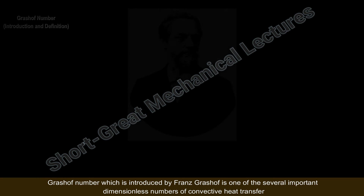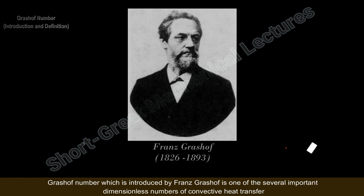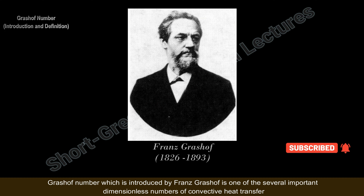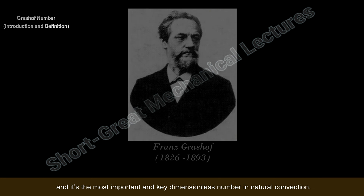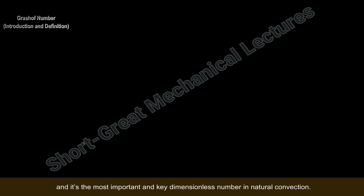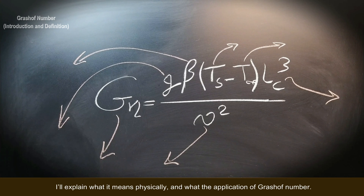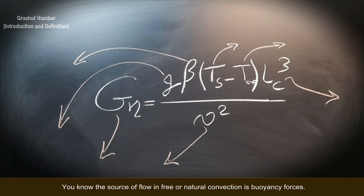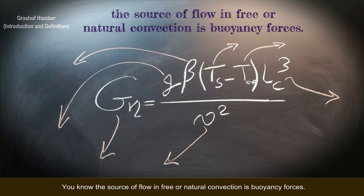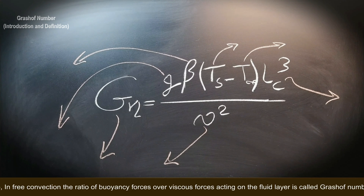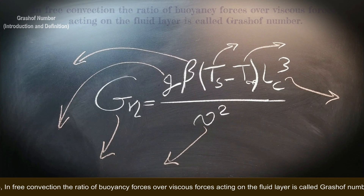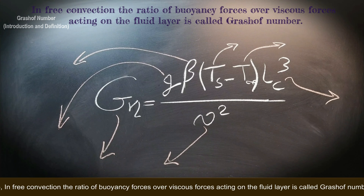The Grashoff number, introduced by Franz Grashoff, is one of the several important dimensionless numbers in convective heat transfer and is the key dimensionless number in natural convection. It plays a role very similar to the Reynolds number, but in natural convection, not in forced convection. The source of flow in free or natural convection is buoyancy forces.